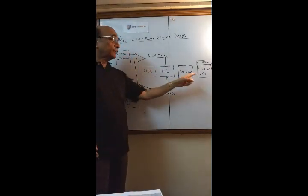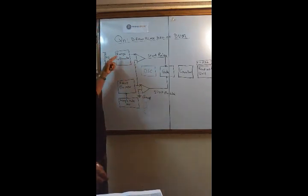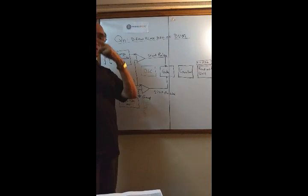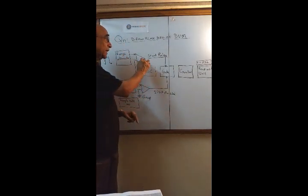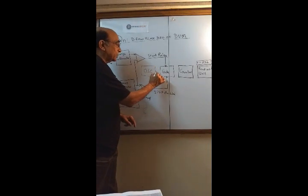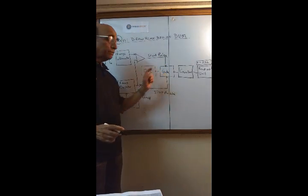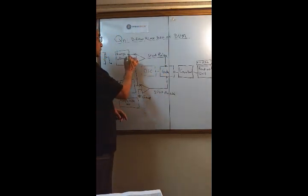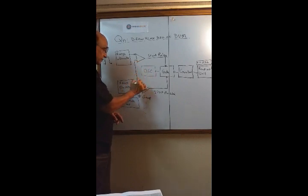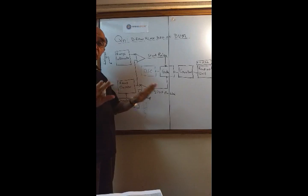First, draw these four units. Next, draw these three units here: one, two, three. Then draw these two references. Add the start pulse and the stop pulse. And next, draw the inputs here and the ground here. That's all. Thank you.